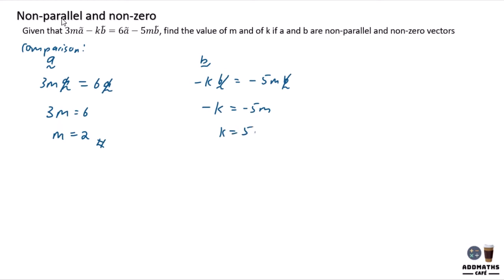k will be equal to 5m. And you know that your m is 2. Substitute the 2 here. You know that your final answer for k will be equal to 10.